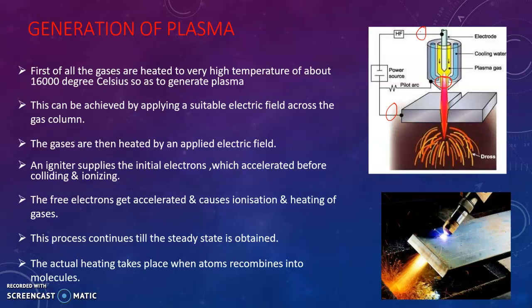These electrons are colliding with other atoms, again forming free electrons and ions, and this process is continuous. By this, they get accelerated and cause ionization and heating of gases. This process continues until a steady state is obtained, and further heating is acquired by the recombination of atoms into molecules.